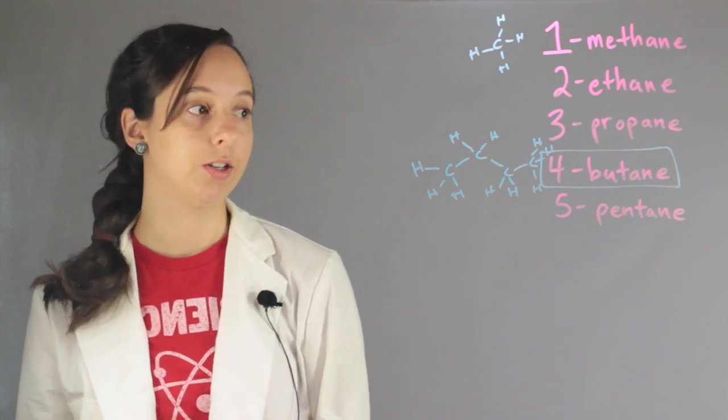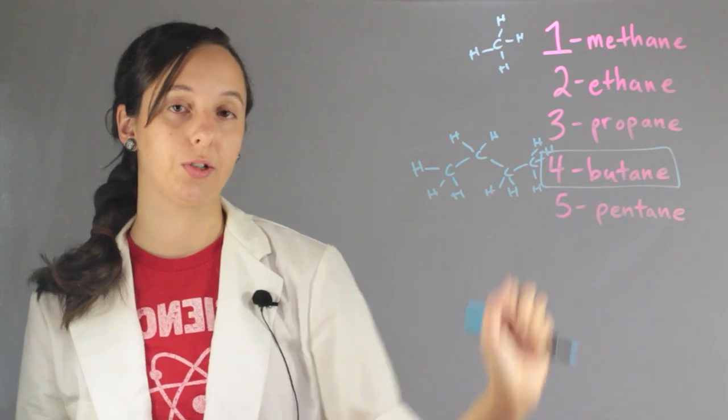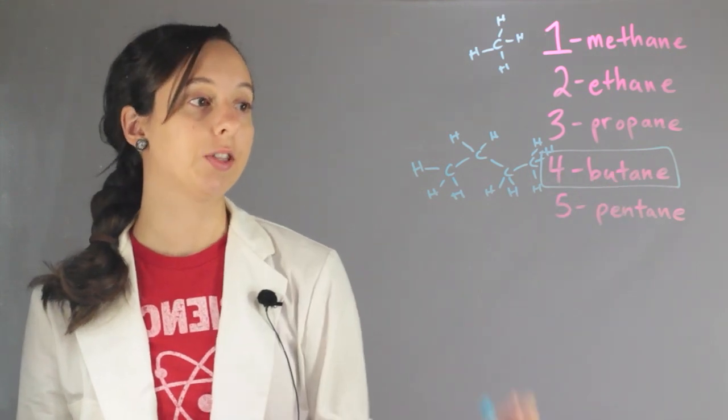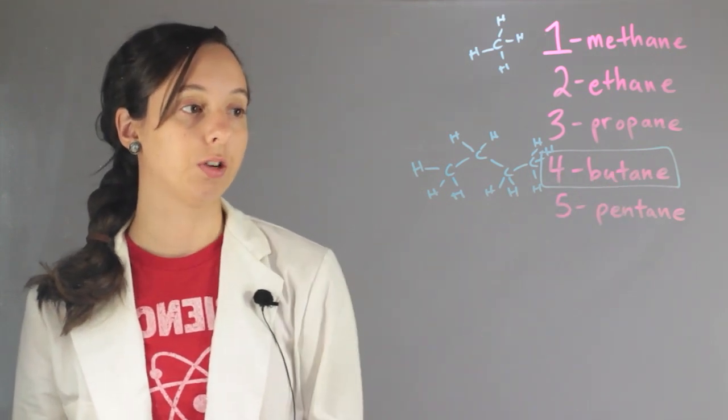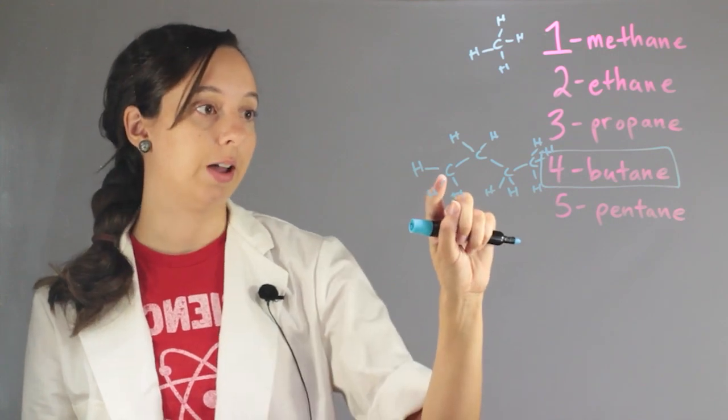But what does it mean when we say isobutane? Well, if we keep the chunk that says butane, we know it's still going to have four carbons. But if we look at this structure, we could actually arrange these in another way. So what if instead of in a straight line,